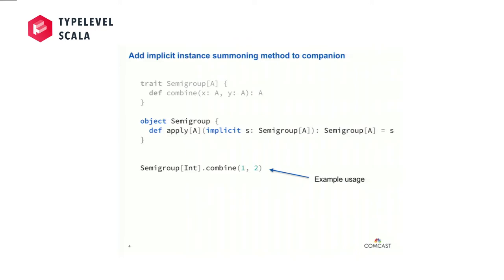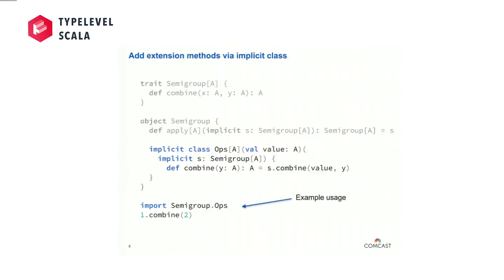In order to make that syntax work, we've got to put this little boilerplate apply method that just summons the implicit value out of implicit scope and returns it directly. If you looked at Scalaz 7 for instance, every single type class has this apply method corresponding to the type class name.